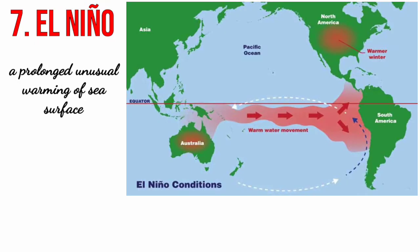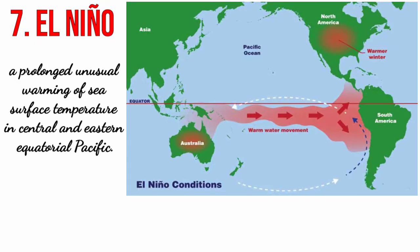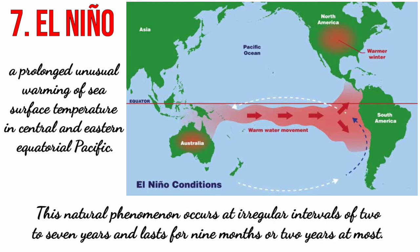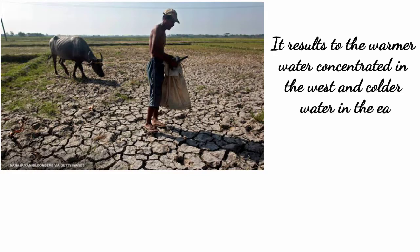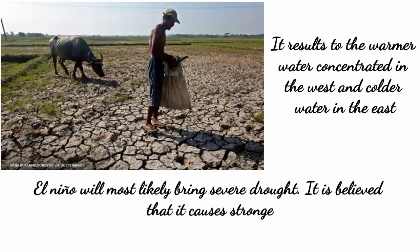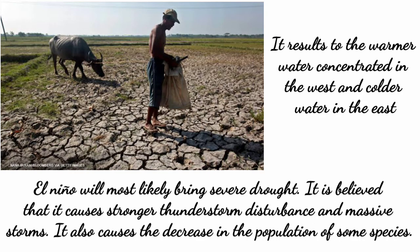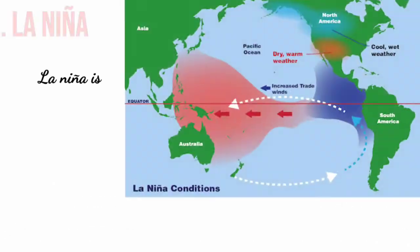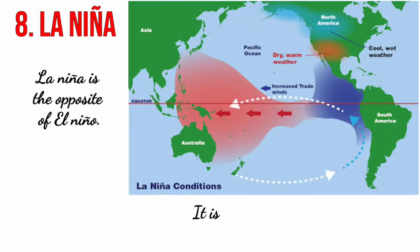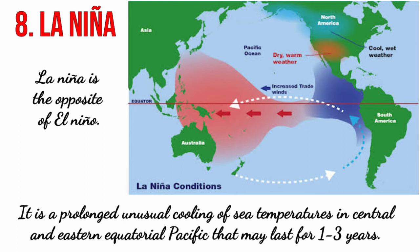Next we have El Niño — a prolonged unusual warming of sea surface temperature in the central and eastern equatorial Pacific. This natural phenomenon occurs at irregular intervals of two to seven years and lasts for nine months to two years at most. It results in warmer water concentrated in the west and colder water in the east, and will most likely bring severe drought. It is also believed to cause stronger thunderstorm disturbances, massive storms, and a decrease in the population of some species. La Niña is the opposite of El Niño — a prolonged unusual cooling of sea temperatures in the central and eastern equatorial Pacific that may last for one to three years.